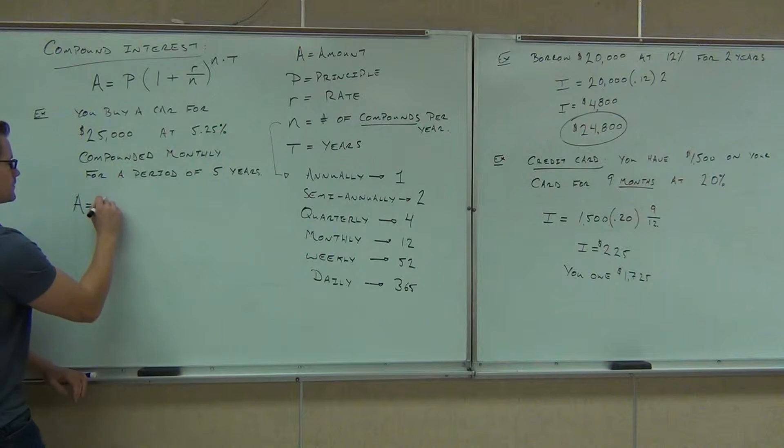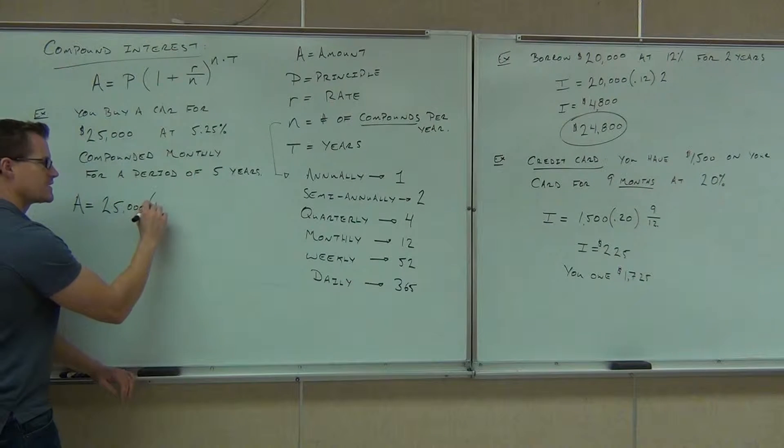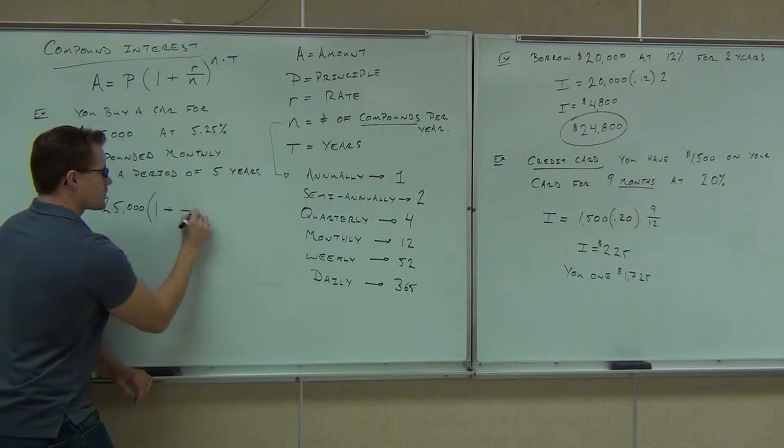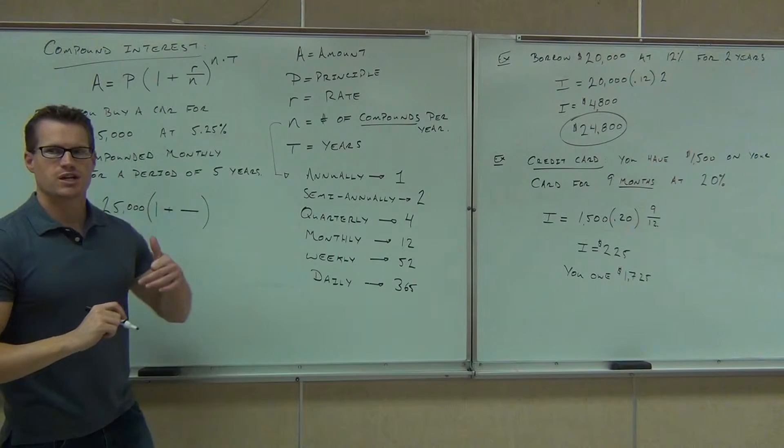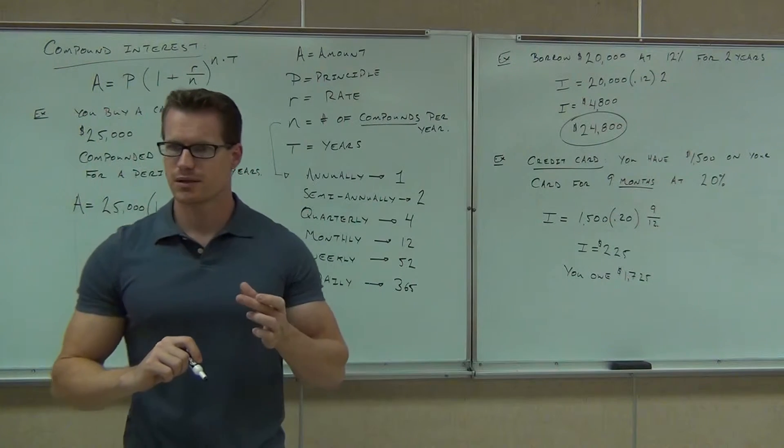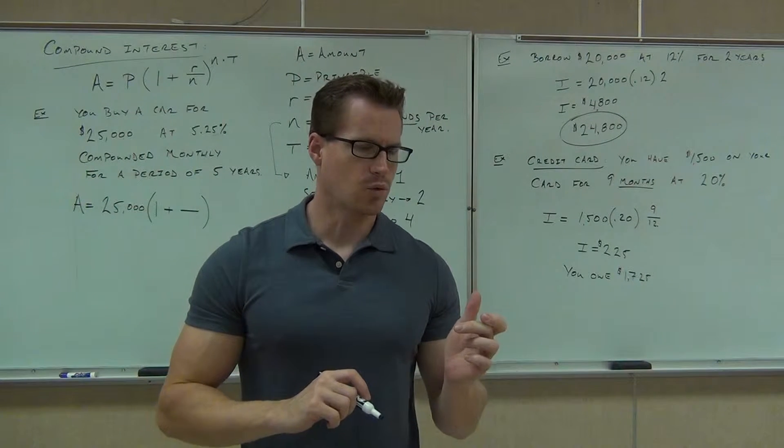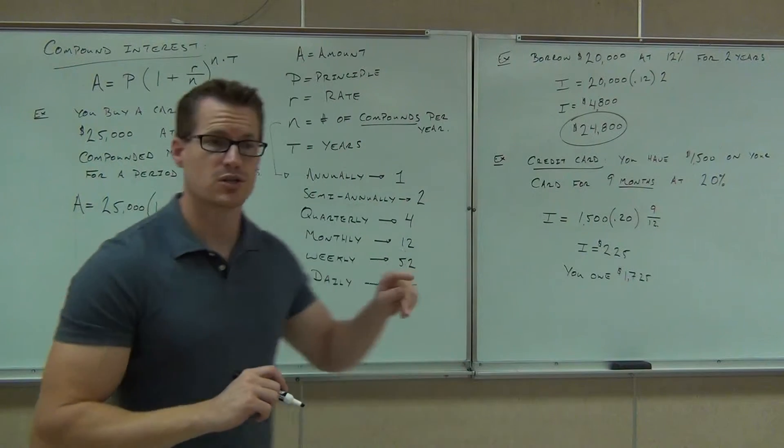Good. The one never changes, and the plus never changes. Now inside of there, you've got a fraction. On the top of your fraction is your interest rate. What's your interest rate? 5.25. So you need to calculate that as a decimal. Are you going to put 5.25 up here?